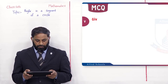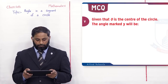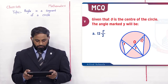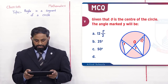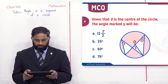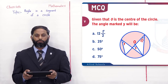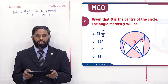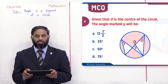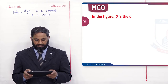Next MCQ: Given O is the center of the circle, the angle marked y will be. Options: A) 12.5°, B) 25°, C) 50°, D) 75°۔ 25° circumference پہ ہے تو یہ circumscribed angle ہے۔ Angle x central angle ہے تو x = 2 × 25° = 50°۔ Angle y بھی circumference پہ ہے تو circumscribed angle ہے، central angle کا half: y = 50/2 = 25°۔ B option correct ہے۔